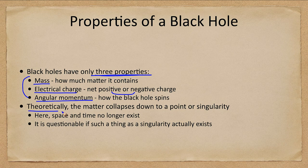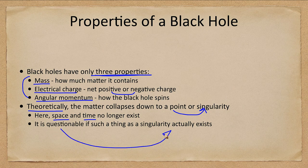Theoretically, the matter collapses down to a point — a singularity — where space and time as we understand them no longer exist. It is questionable whether a singularity actually exists, or if something else happens when the black hole compresses down. We simply do not know at this point.